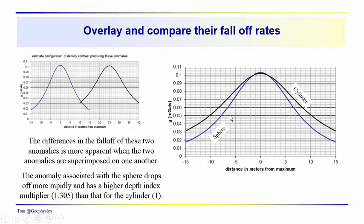And of course, you'll notice that for the sphere, the depth of x one half in this case is about 7.5. And we have to multiply that by 1.305 in order to get 10. In the case of the cylinder, the cylinder falls off to one half of its maximum value at a distance of 10 meters from the symmetry point. And the depth index multiplier is one.